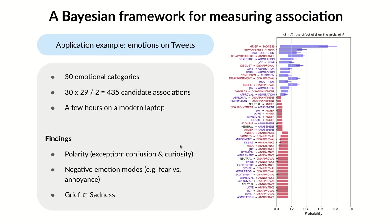As a demonstration, we applied it to a set of emotions on tweets. We had 30 emotion categories, leading to about 400 candidate associations, and we were able to test all of them in a few hours on a modern laptop, with some interesting findings.